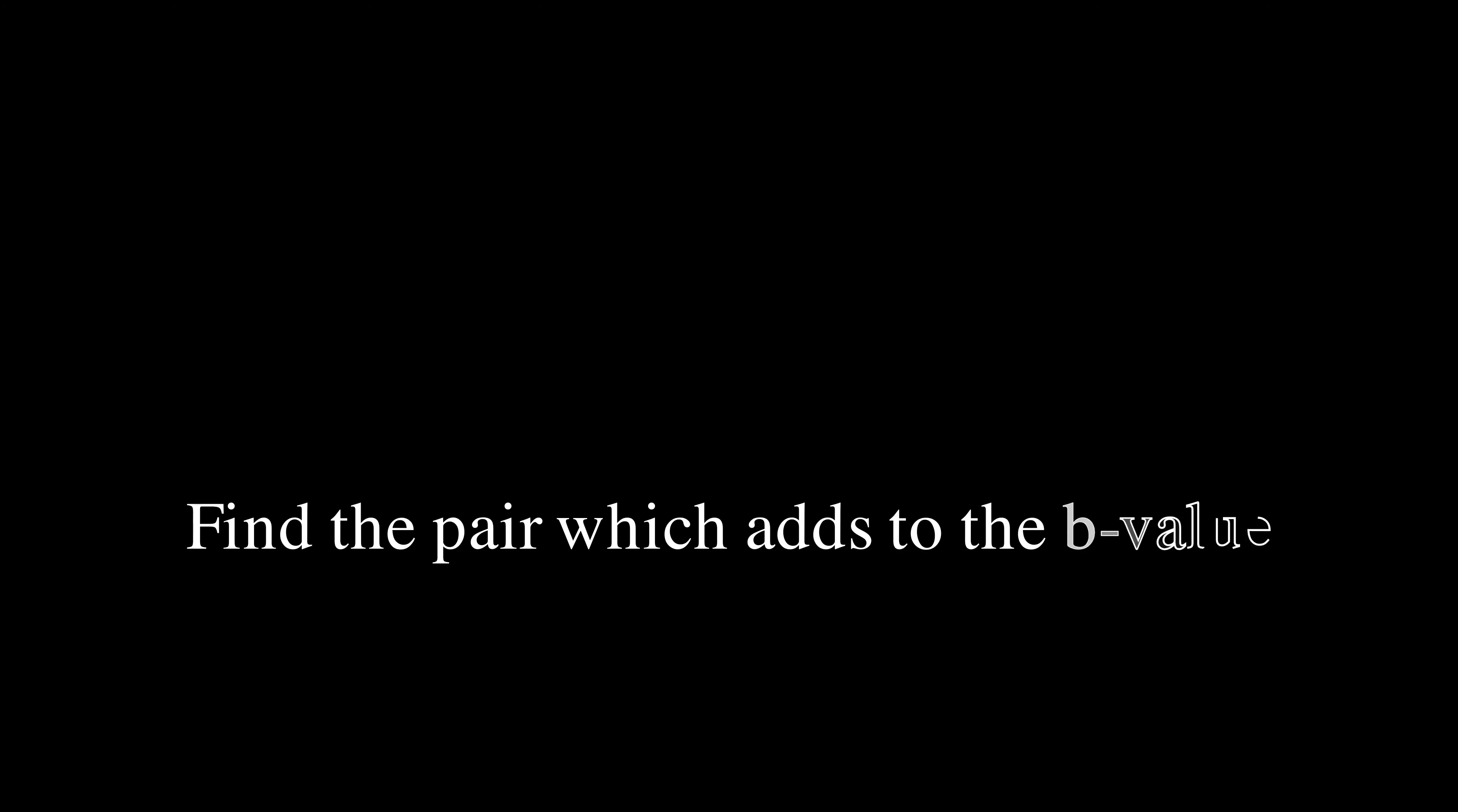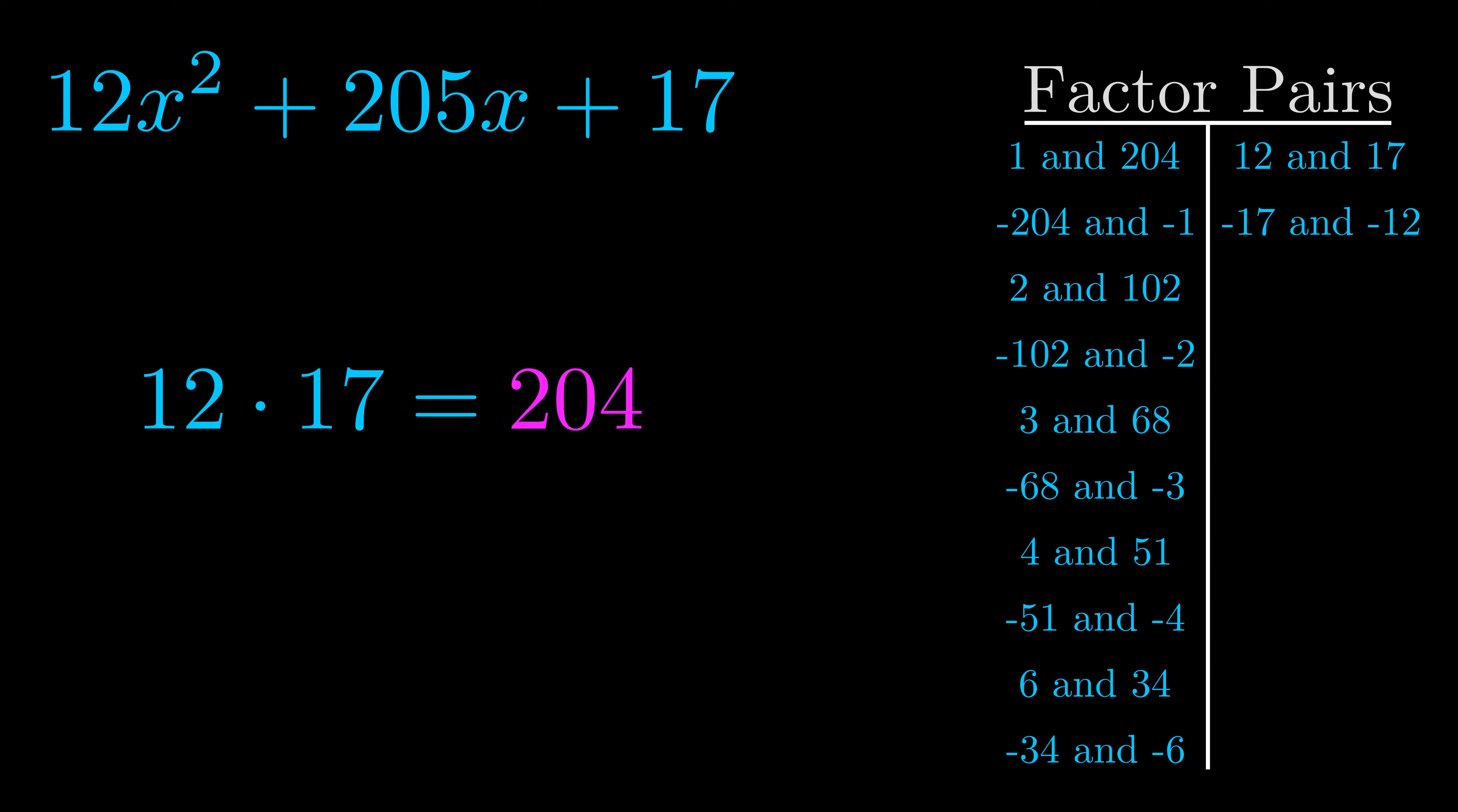The b value is the coefficient on the x term. That's the middle term, the one that we haven't done anything with yet. And really this is the only factor pair that we need.